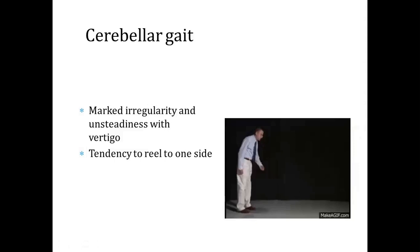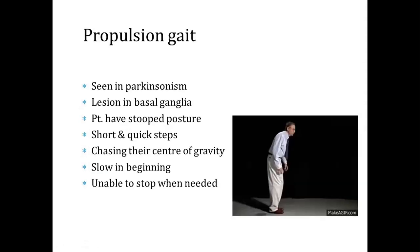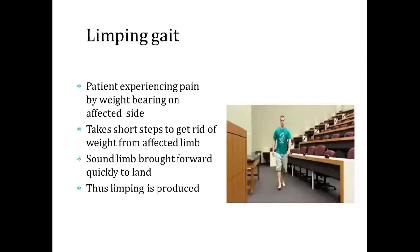Cerebellar gait: marked irregularity and unsteadiness with vertigo, tendency to reel to one side. Propulsion gait, seen in parkinsonism with a lesion in the basal ganglia: the patient has a stooped posture, takes short and quick steps, chasing their center of gravity, slow in beginning and unable to stop when needed. Limping gait: the patient experiences pain when weight-bearing on the affected side, takes short steps to get rid of weight from the affected limb, and the sound limb is brought forward quickly to land.